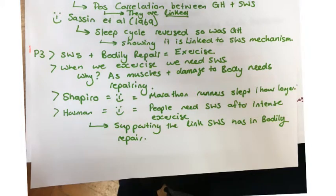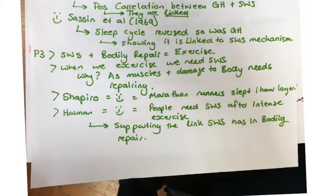In paragraph three, you're going to be looking at slow-wave sleep and bodily repair, this time linking it to exercise. When we exercise, we should expect to need more slow-wave sleep, because our muscles are increasingly damaged — ripped and torn apart during intensive exercise. The two supporting studies here are Shapiro and Harmon. Shapiro found that marathon runners slept one hour longer, showing slow-wave sleep was needed to repair the damage. Harmon also supports the idea that people need slow-wave sleep after intense exercise.